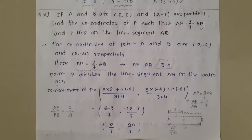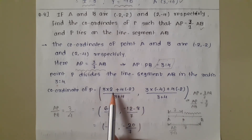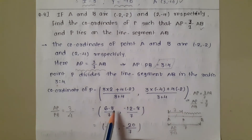Using the section formula: x = (m1·x2 + m2·x1)/(m1 + m2), y = (m1·y2 + m2·y1)/(m1 + m2). Here m1 = 3, m2 = 4, x1 = -2, x2 = 2, y1 = -2, y2 = -4. So x = (3×2 + 4×(-2))/(3+4) = (6-8)/7 = -2/7, and y = (3×(-4) + 4×(-2))/7 = (-12-8)/7 = -20/7. The final answer is P = (-2/7, -20/7).